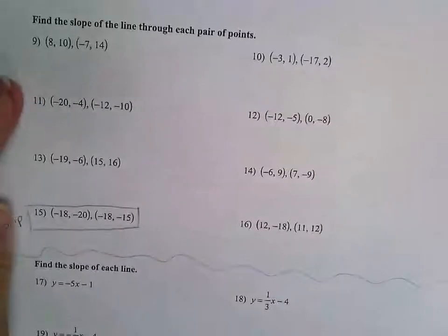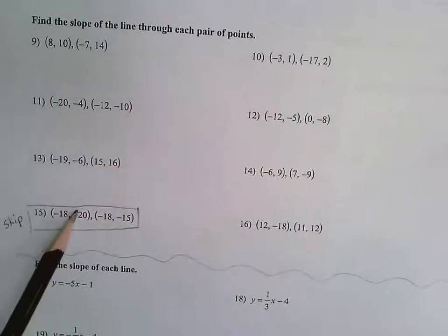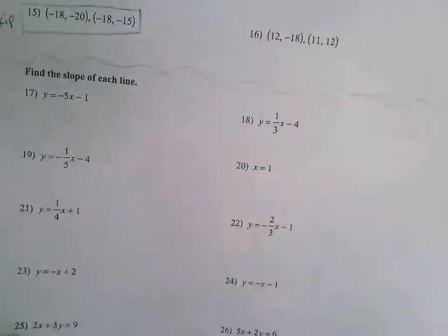On the back, same thing. Don't change any of these to decimal form. Leave them in fractional form or simplify them to an integer. I want you to skip number 15 and you don't need to do the bottom. We'll talk about that another day.